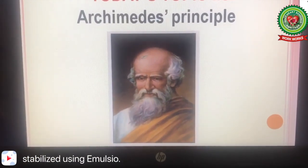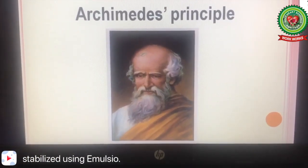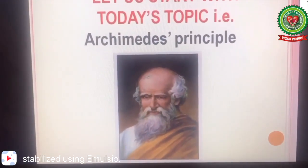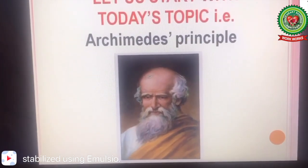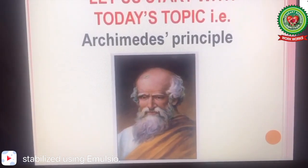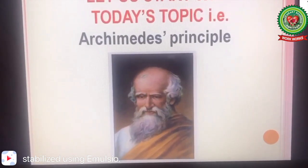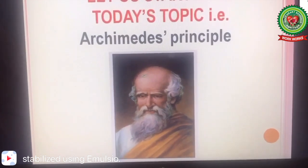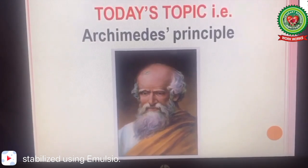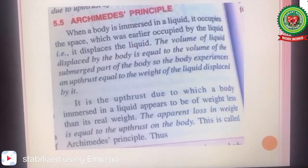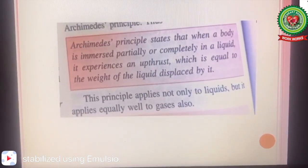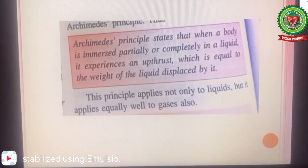Archimedes was a Greek mathematician, physicist, inventor, engineer and astronomer. Once while bathing, Archimedes realized that when he was stepping into his bathtub, the water level in the bathtub was increasing. He further studied this and gave us a very important law which is known as Archimedes principle.